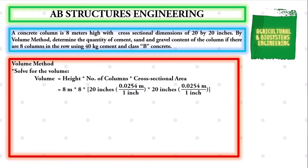Substituting values, we have volume is equal to the product of the height of 8 meters, multiplied to the number of columns of 8, times the cross sectional area of 20 inches by 20 inches.